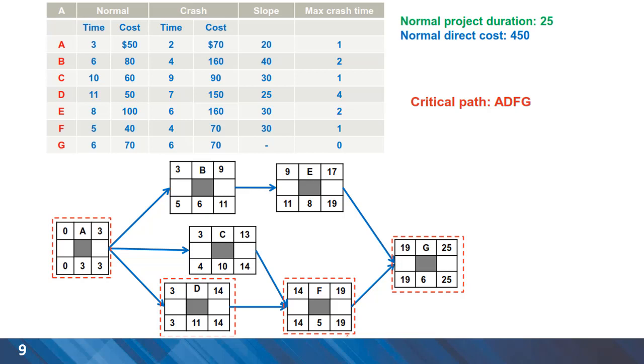We can draw the critical path of the project based on the logic given and activities ADFG are on the critical path. Any reduction of time on these activities can reduce the total duration for the project which is currently 25 days.